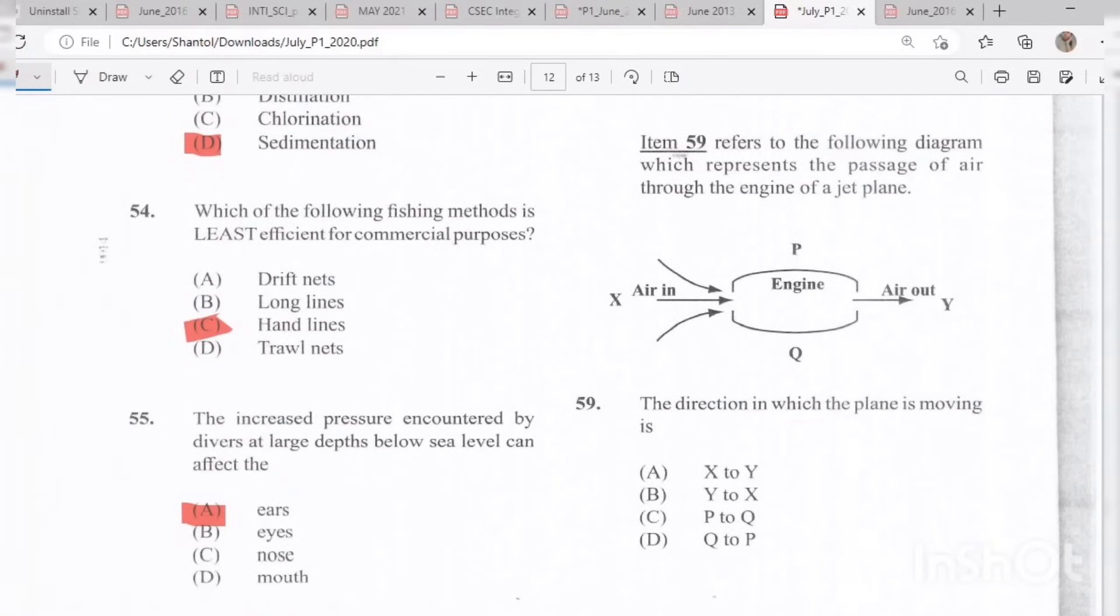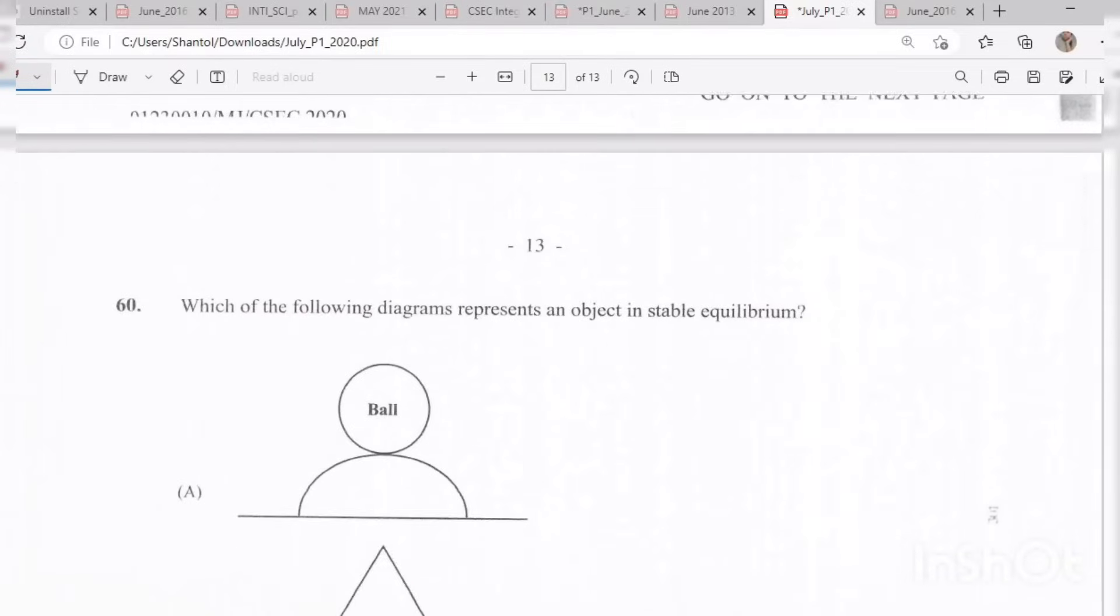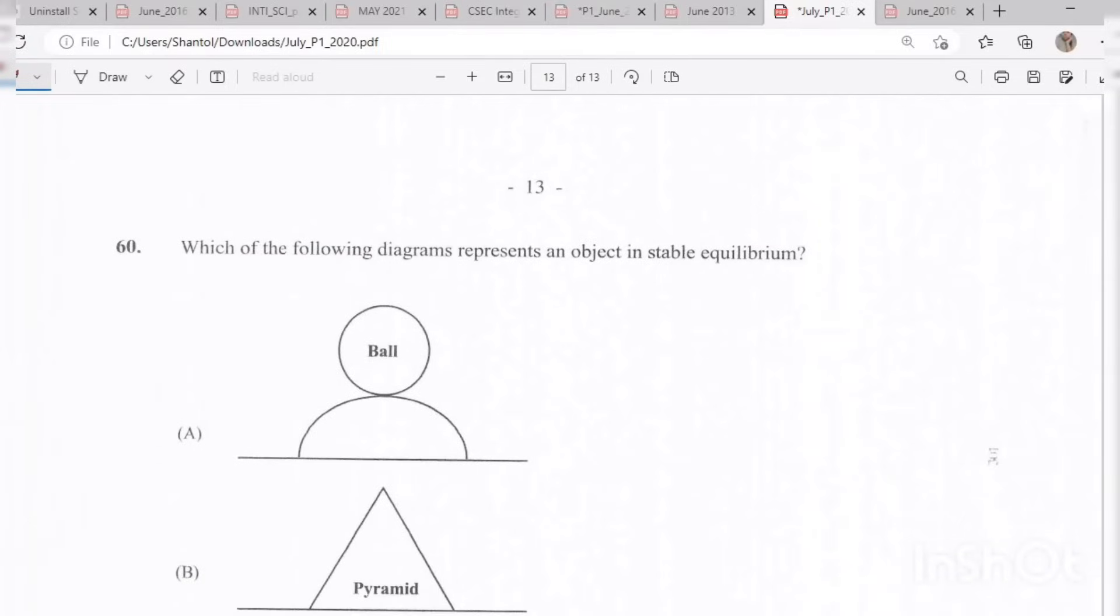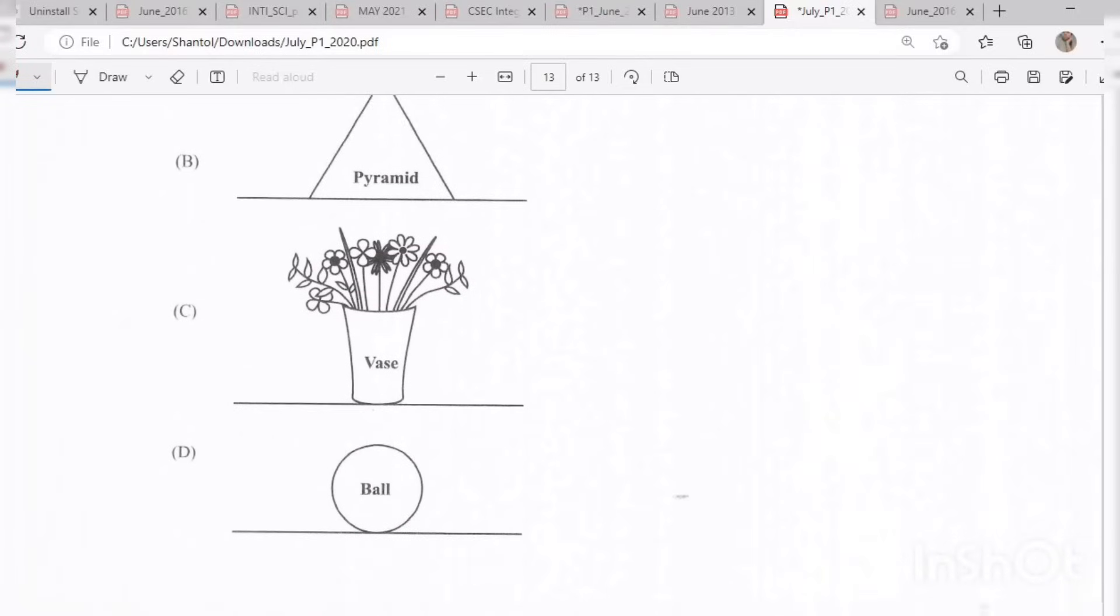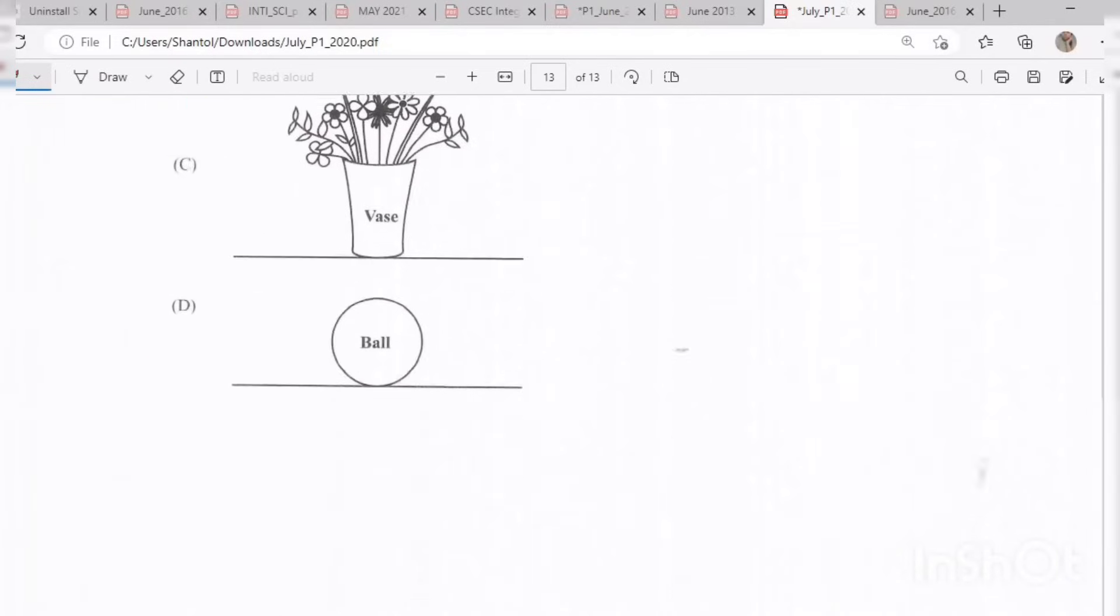Item 59 refers to the following diagram which represents the passage of air through the engine of a jet plane. The answer is B, from Y to X. The direction in which the plane is moving is from Y to X. And the final question, question 60: Which of the diagrams represent an object in stable equilibrium? Is it A, B, C or D? And the answer would be B, the pyramid. And those are your 60 questions.